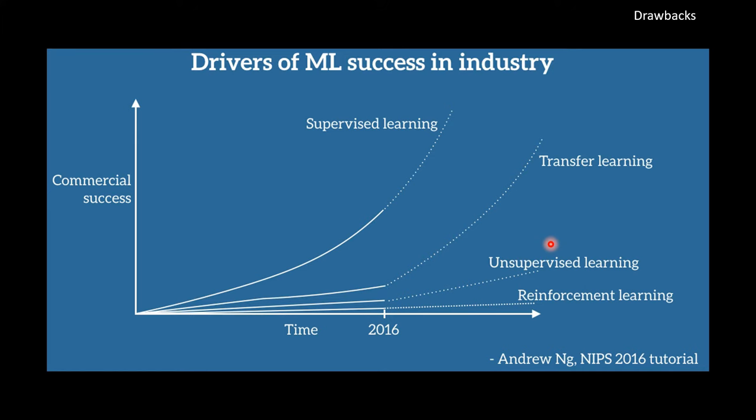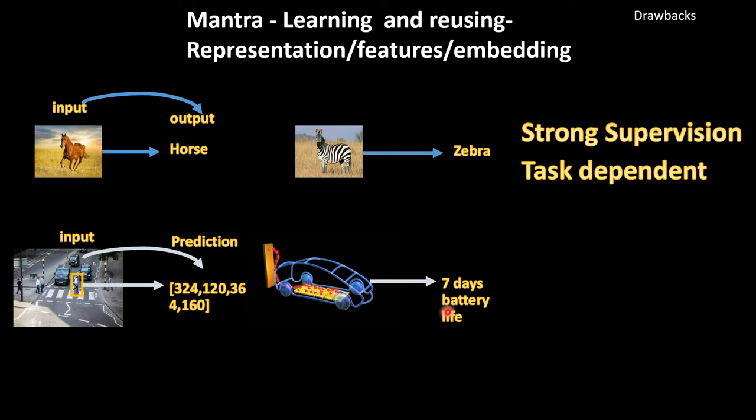As we discussed already, the mantra is learning and reusing good representations, either it could be classification, regression, or it could be other domains of NLP, speech recognition. But here the problem is we need strong supervision and they are task-dependent. We need to do fine-tuning in order to learn representations in different tasks, and obviously we need a huge amount of labeled data. So are there any alternatives to this strong supervision?